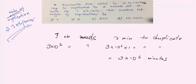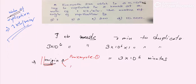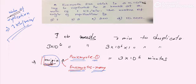First, what is an origin? From where the replication starts is known as the origin. In prokaryotes there is only one origin, but in eukaryotes the length of DNA is much larger, so there are many origins. That is the key difference between prokaryotes and eukaryotes in terms of replication.